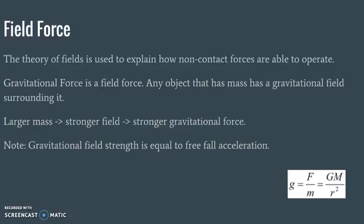The formula for gravitational field strength is Big G times the mass of the planet (or object creating the field) divided by the distance squared from the test mass or test object.